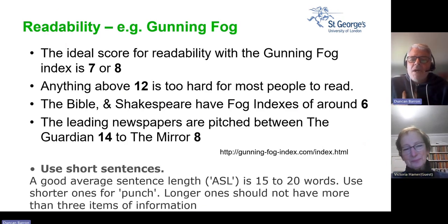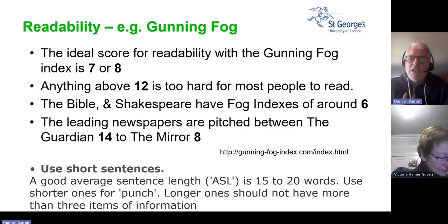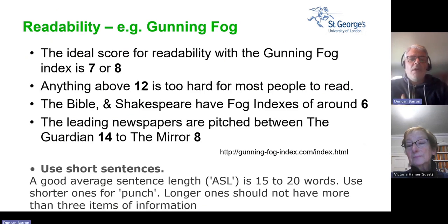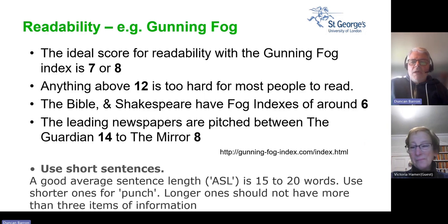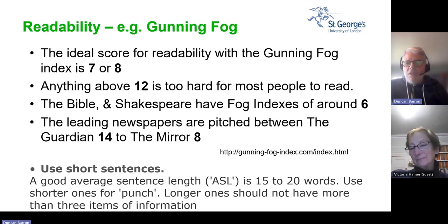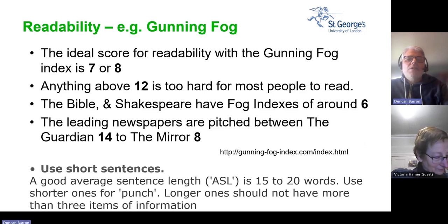There is a potentially useful tool called Gunning Fog. There's a website where you can paste your text and it gives you a readability score. Anything above a score of 12 is too hard for most people to read. The algorithm works out sentence length — the general advice is to keep average sentence length to about 15 to 20 words, or even use shorter sentences for bigger punch. Longer sentences should not have more than three items of information. You could also use tools within Word or Grammarly.